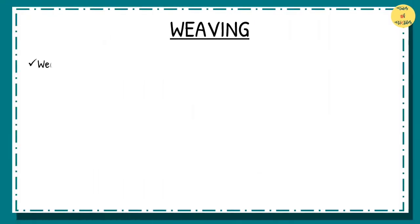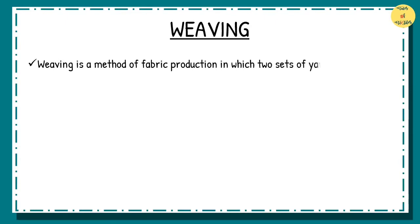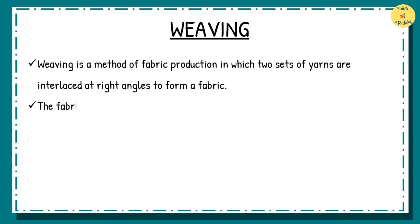Weaving is a method of fabric production in which two sets of yarns are interlaced at right angles to form a fabric. The fabric is usually woven on a loom,